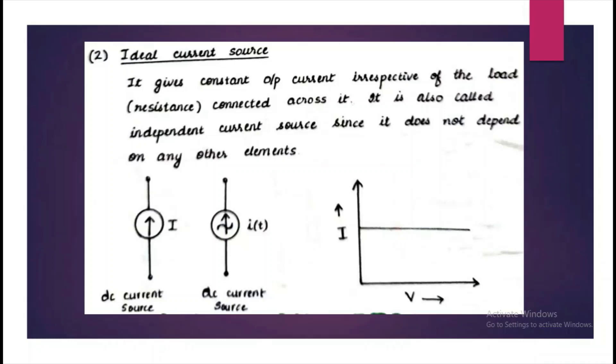Next, we have an ideal current source. The current source is represented by an arrow symbol for DC source and for an AC source we have an arrow with a tilde sign on top of it. Here, the current is a constant irrespective of the voltage drawn from that supply.